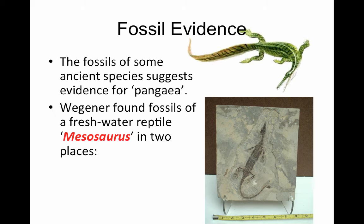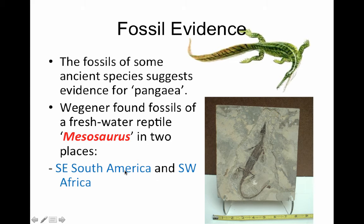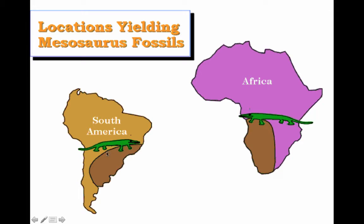Wegener also found fossil evidence. The Mesosaurus has no fins, no great swimming capability, and is a freshwater reptile. Mesosaurus was found in South America and Southwest Africa — the sides of those two continents that would meet up. The distance between these is about 6,000 kilometers of open ocean. This creature is not a great swimmer, and even if it were, as a freshwater reptile, it could not survive in the open saltwater ocean.